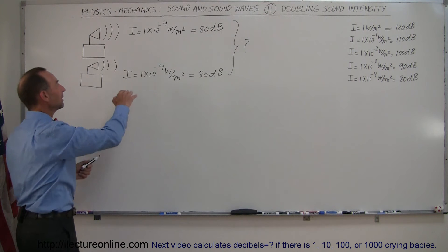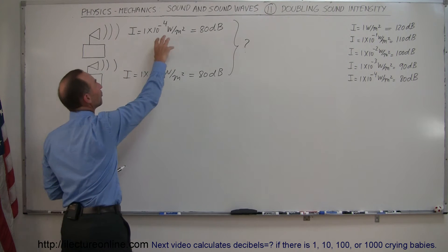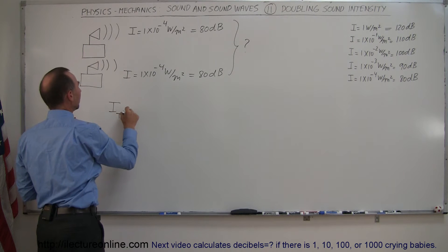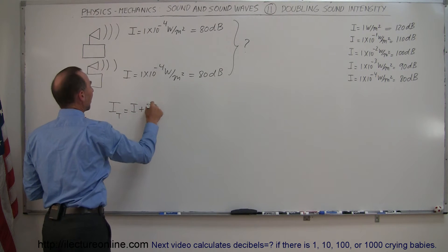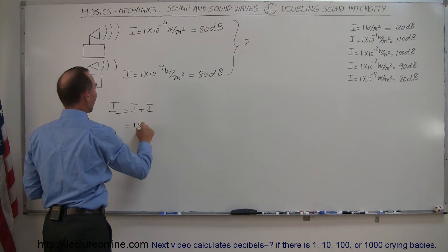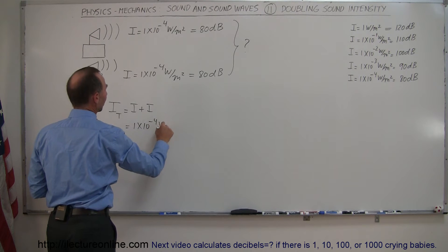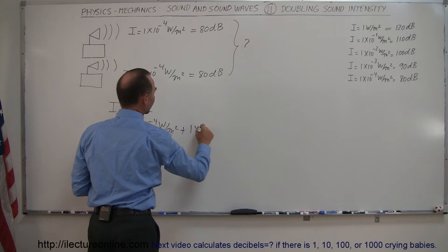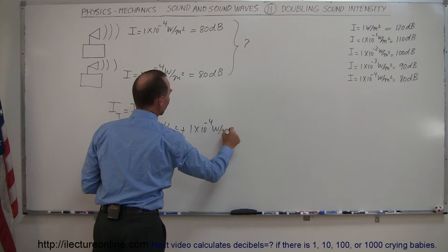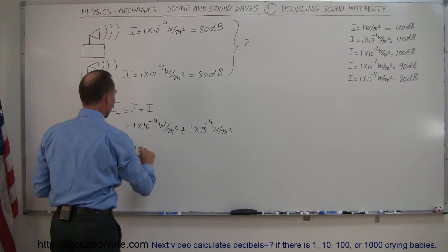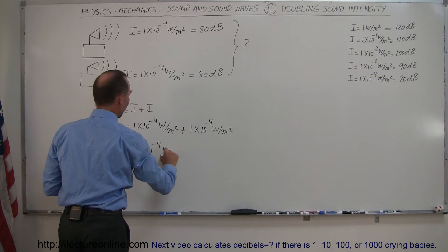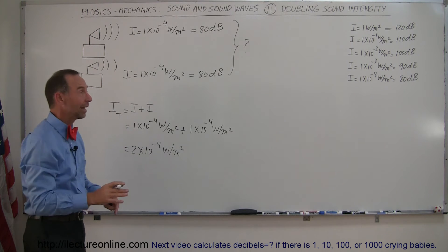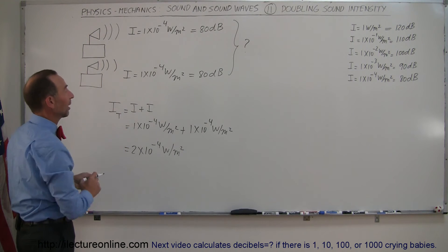What you need to do instead is double the intensity and then convert to decibels. So the total intensity is equal to I plus I, which means it's 1 times 10 to the minus 4 watts per square meter plus 1 times 10 to the minus 4 watts per square meter, equal to 2 times 10 to the minus 4 watts per square meter. Then we convert this number into decibels — that's what it means to double the sound intensity.